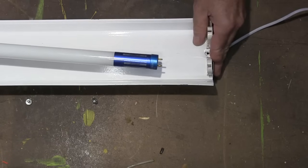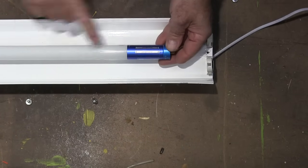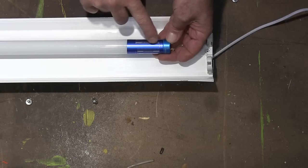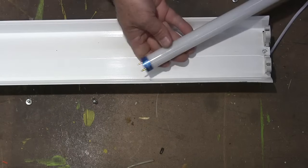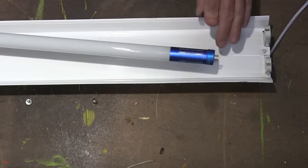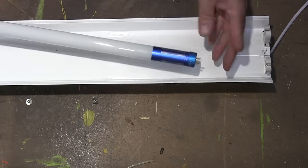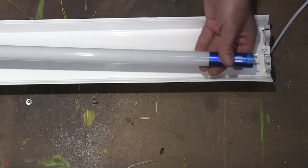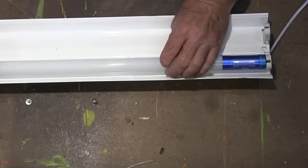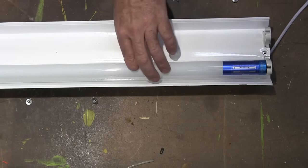Here's our bulb right here. And you can see it's marked on one end. It shows you that this end connects to the power. The other end has nothing on it. So this is your end. And you want to be sure that you connect this to the end that you've connected your power to. Just put it in like you would a normal bulb.